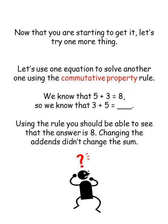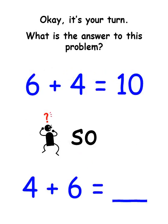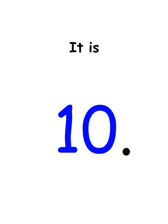Now that you are starting to get it, let's try one more thing. Let's use one equation to solve another one using the Commutative Property Rule. We know that 5 plus 3 equals 8, so we know that 3 plus 5 equals... Using the rule, you should be able to see that the answer is 8. Changing the add-ins didn't change the sum. Okay, it's your turn. What is the answer to this problem? 6 plus 4 equals 10, so 4 plus 6 equals... Yep, it is 10.